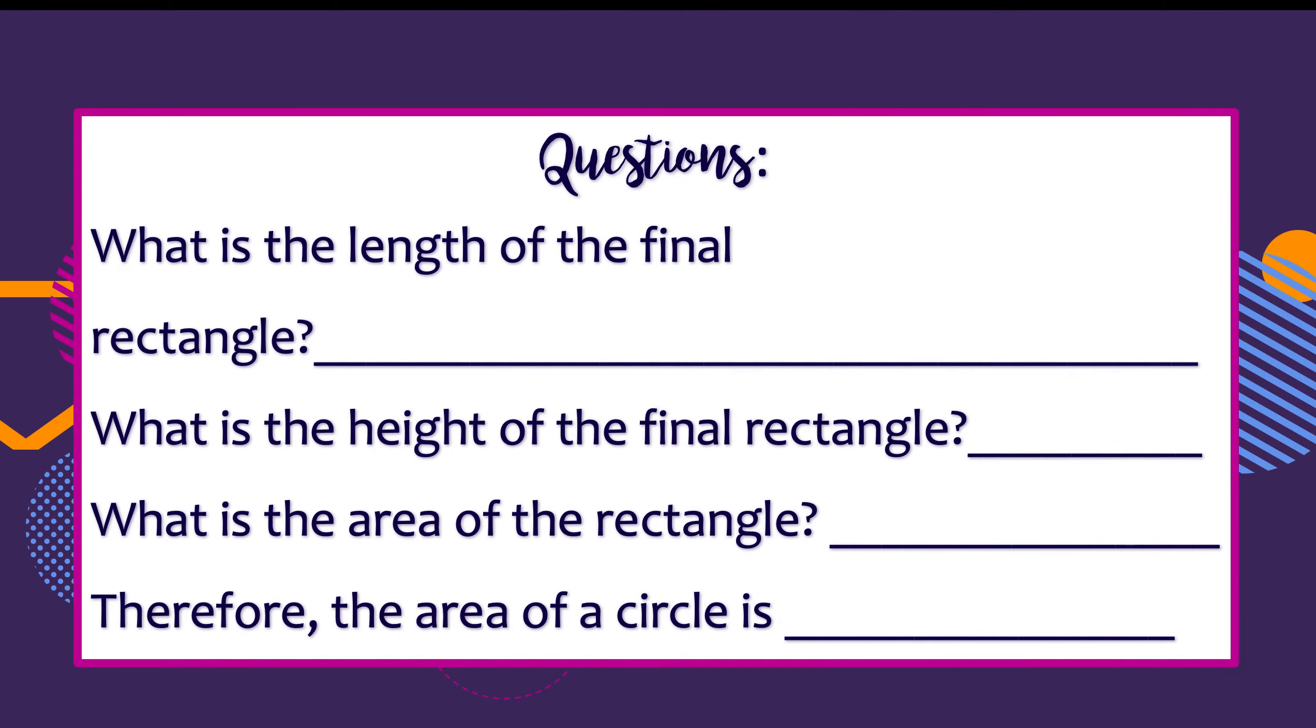Here are my questions. What is the length of the final rectangle? Well, if you remember when we laid it out along the circumference, we had our red part and our blue part, and that second part went back over. So it ends up being half of the circumference. Half of πD, π times diameter, or you might call the circumference 2πr. If you take half of 2πr, you end up getting just πr. So the length of the rectangle is πr.